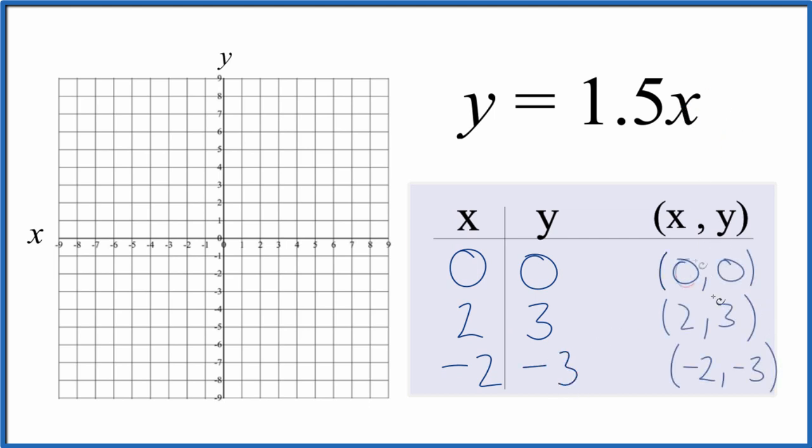So these are the points we'll graph for the equation y equals 1.5x. We have zero and zero for y, that's at the origin there. Then we have x is two, y is three, go two and then up three. We could stop with two points and draw our line here, but I like to have three in case I've made an error.